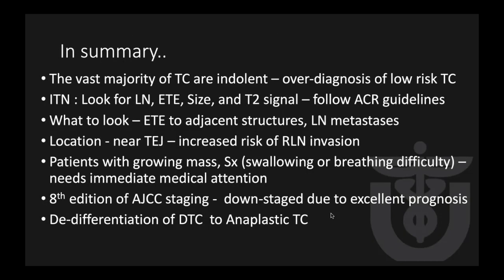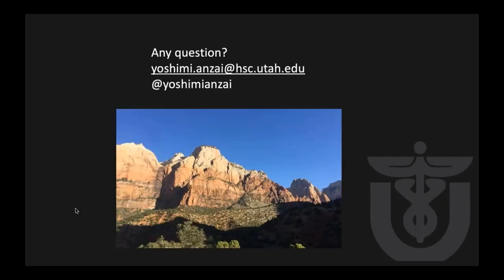In summary: the vast majority of thyroid cancers are indolent, so we don't want to over-treat low-risk thyroid cancer. Look for extrathyroidal extension and lymph nodes for incidental thyroid nodules, and use T2 signal to guide your recommendations. Our job on CT or MRI is to evaluate the extent of tumor. The AJCC 8th edition downstaged practically all thyroid cancers because of the excellent prognosis, but there are bad actors like de-differentiation to anaplastic thyroid cancer to keep in mind. Thank you for your attention and thank you to RSNA for the invitation.